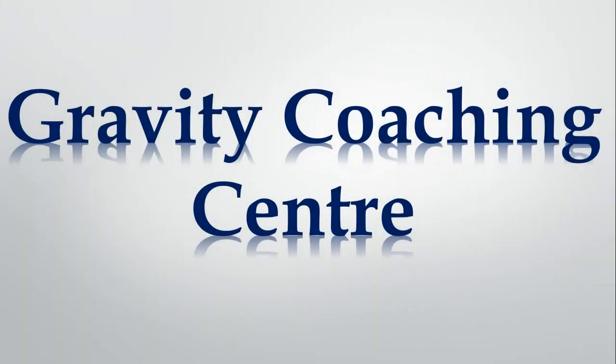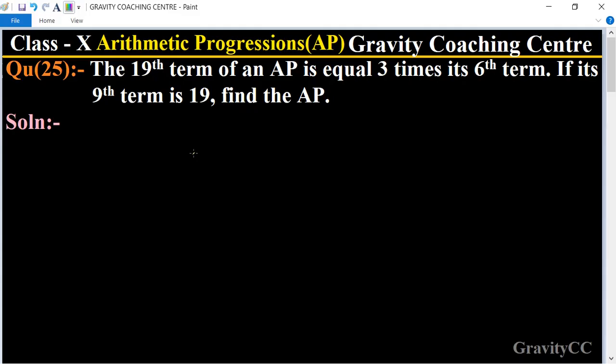Welcome to our channel, Gravity Coaching Centre. Class 10, chapter Arithmetic Progressions, question number 25. The 19th term of an AP is equal to three times its 6th term. If its 9th term is 19, find the AP.